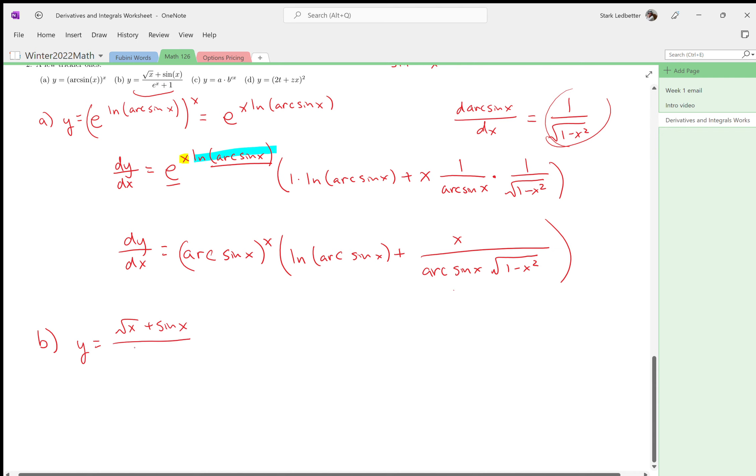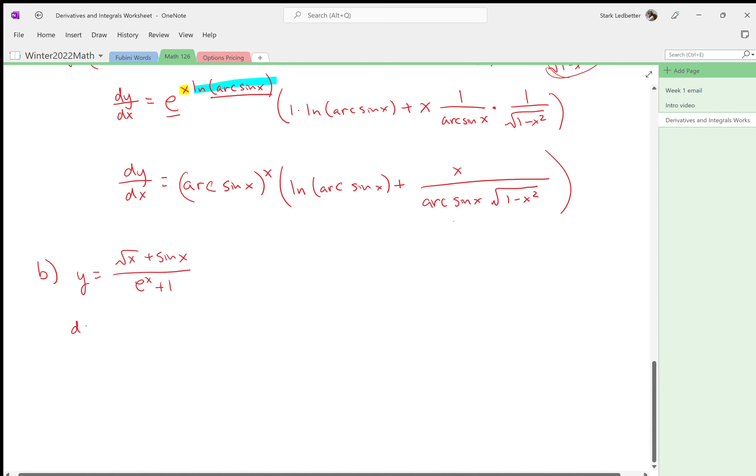Anyways, part b, another ugly thing: y equals the root of x plus sine x over e to the x plus one. So let's take the derivative. We need to do a quotient rule and we'll need to do some things within the quotient rule.